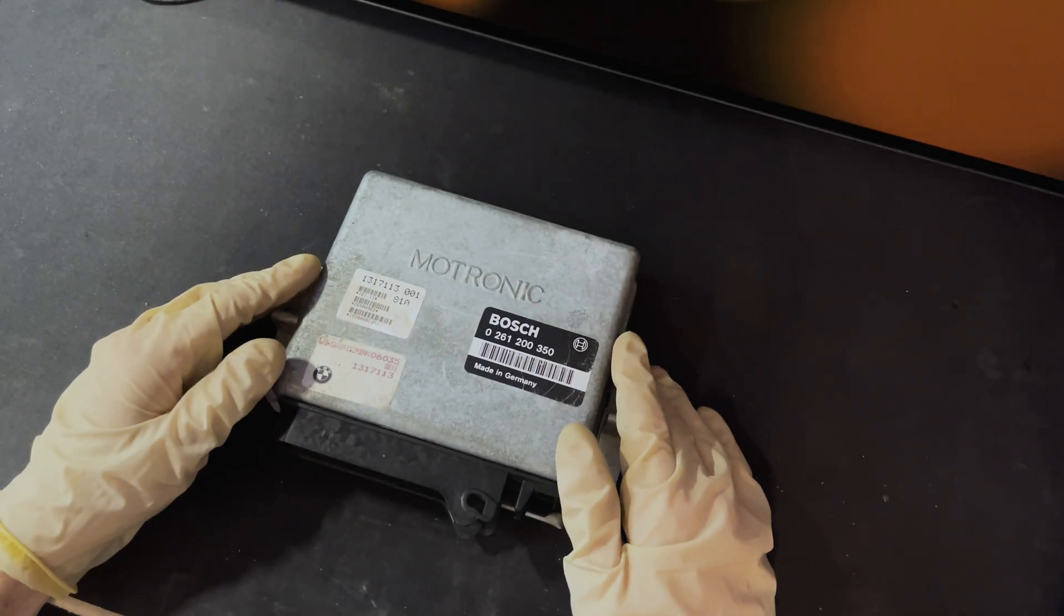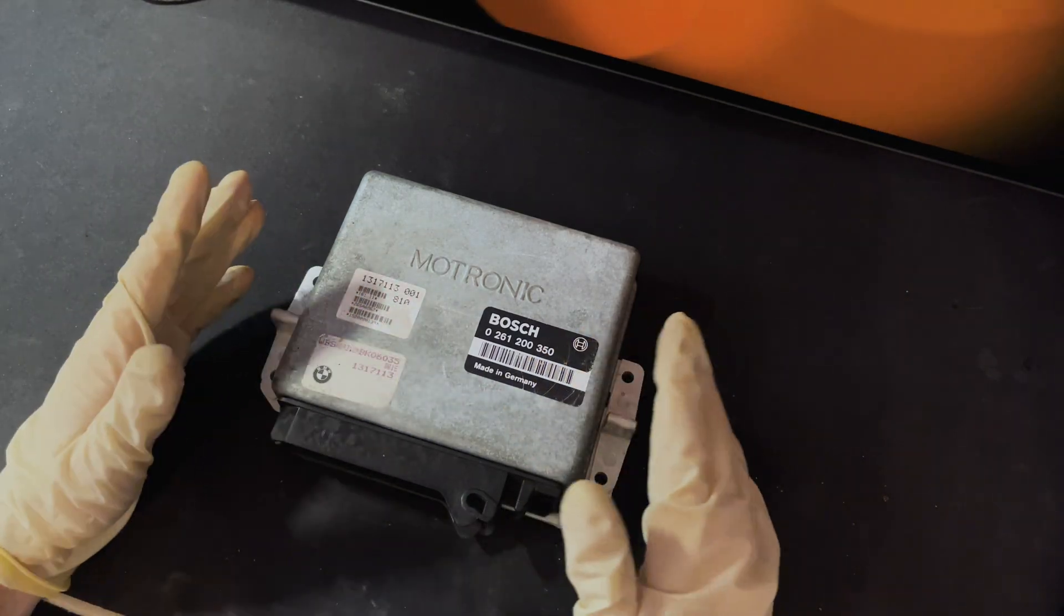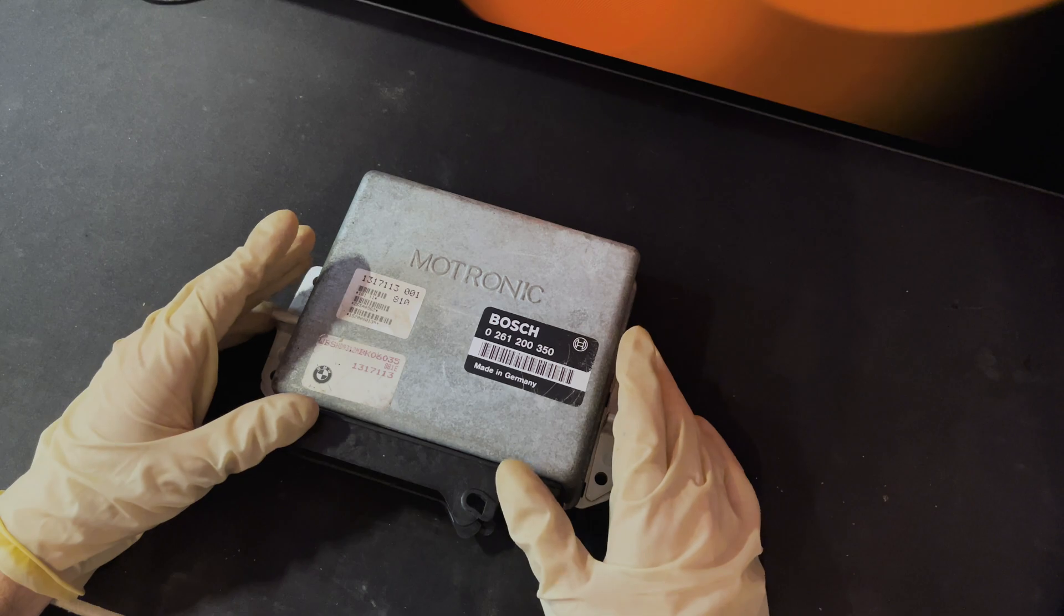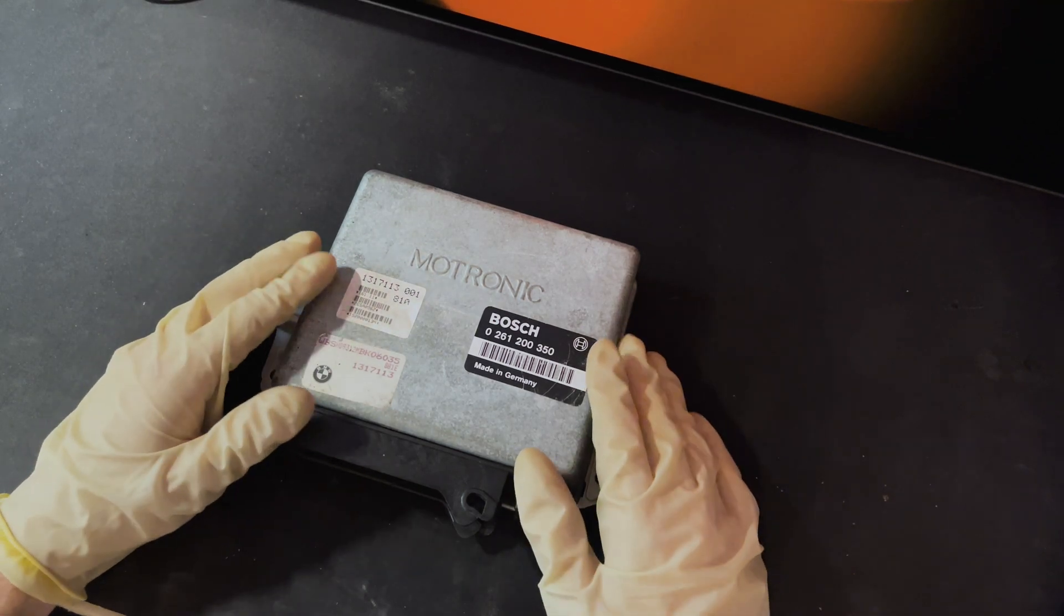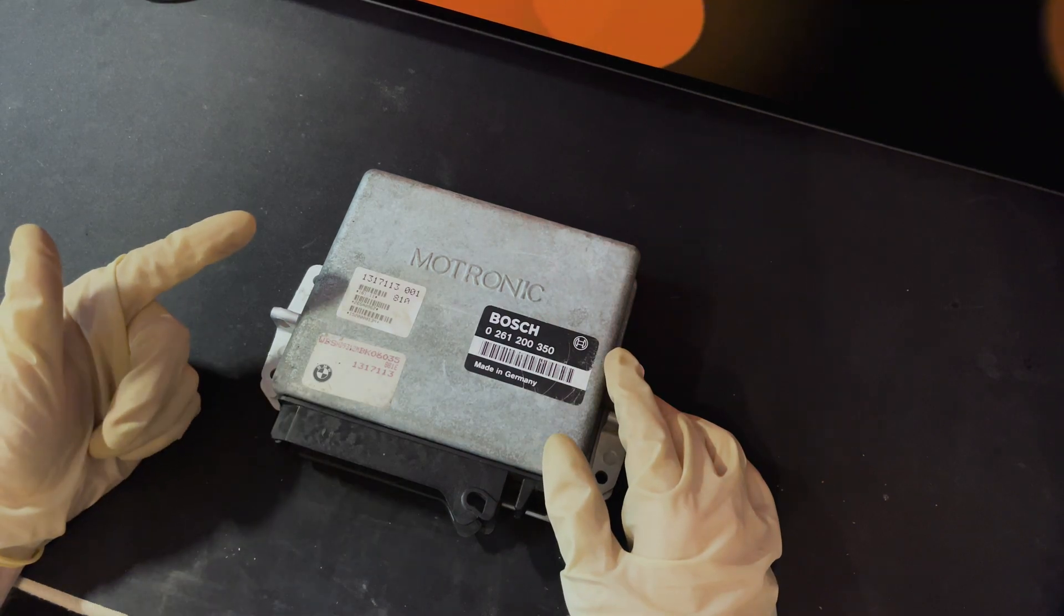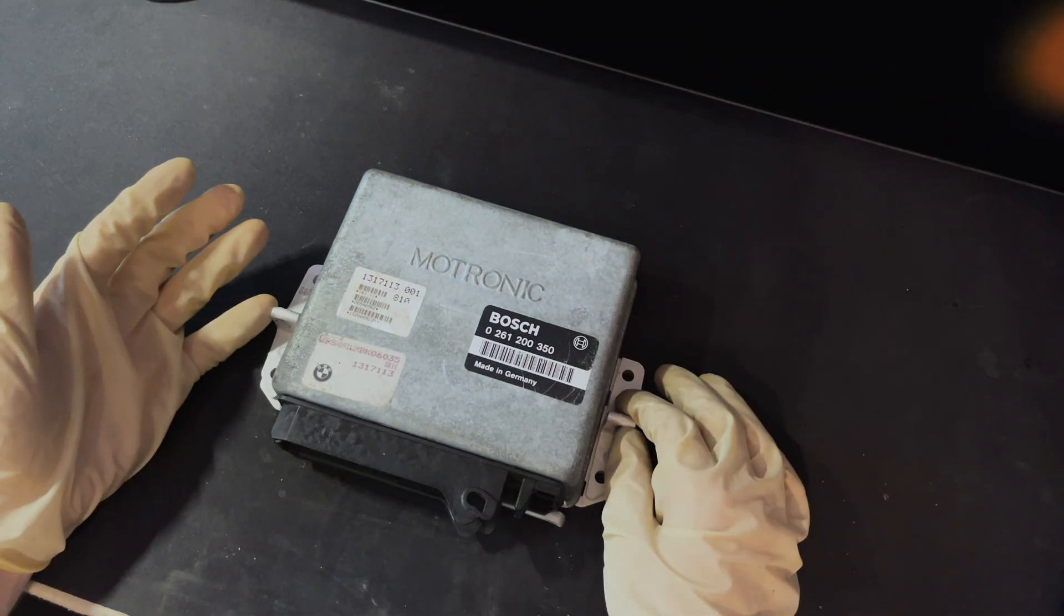Today I wanted to make an informative video on how to properly take apart one of these Motronic ECUs for a BMW E34 style chassis. This should apply to models such as M5, 535i, to an extent 540, 530, and 525i.